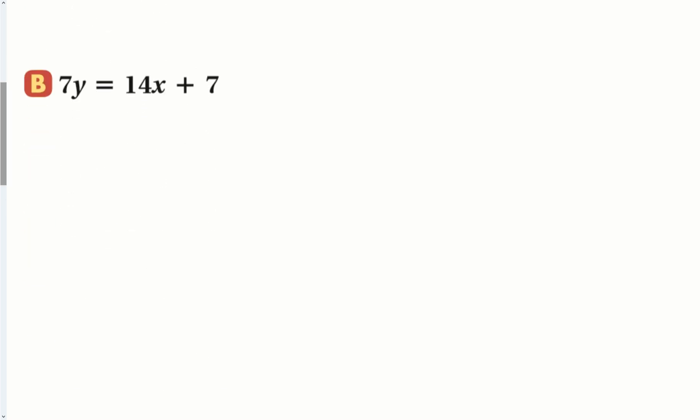For part B, the problem is when I divide everything by 7, I do get a number times x, but then I also get plus 1. This is not direct variation. This is a linear equation. This is what we're going to look at for the rest of the chapter, but it just happens to not be a direct variation equation.